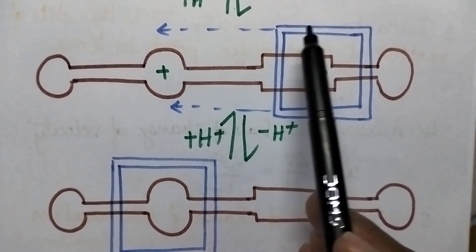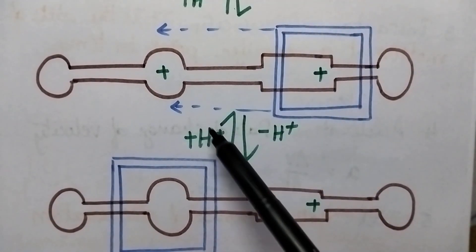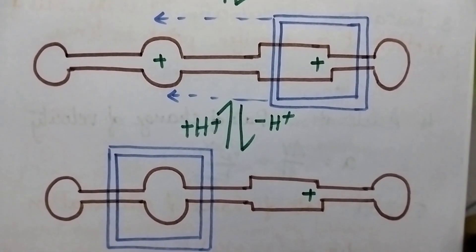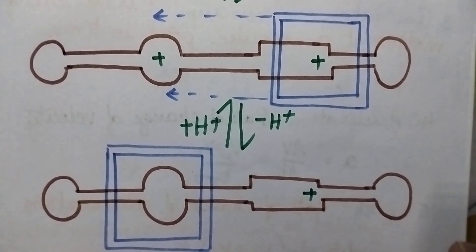In this way, through deprotonation or reprotonation, the macro cycle moves from one position to another. These molecular shuttles are called acid-base controlled molecular shuttles.